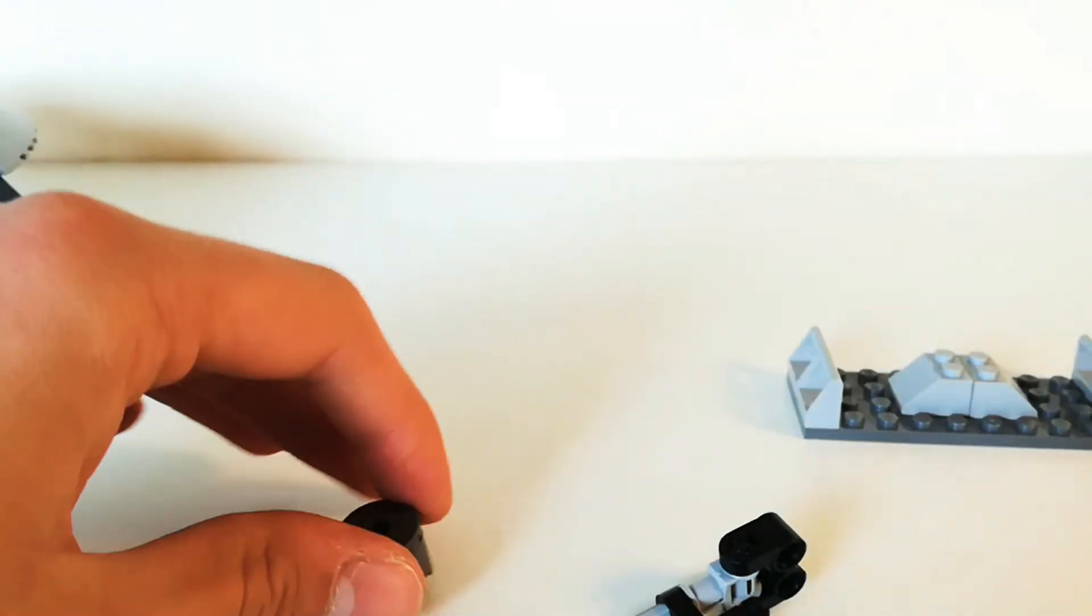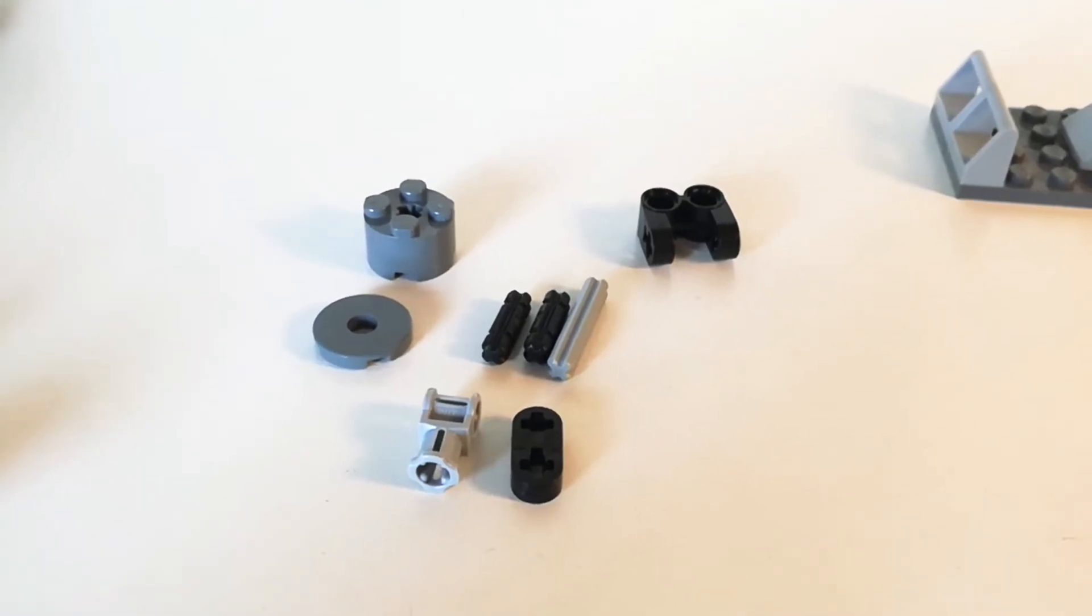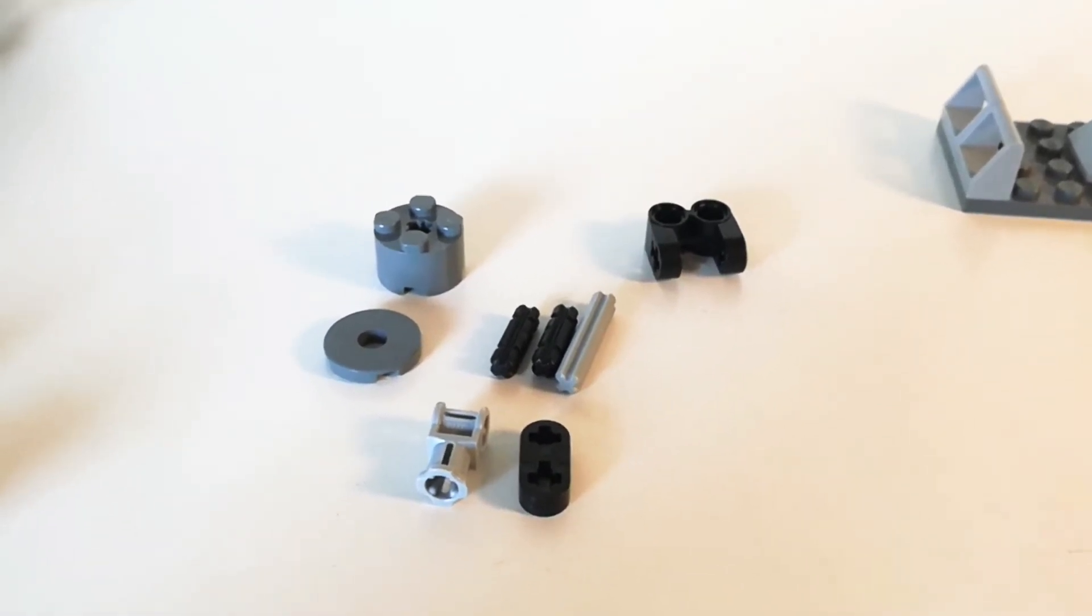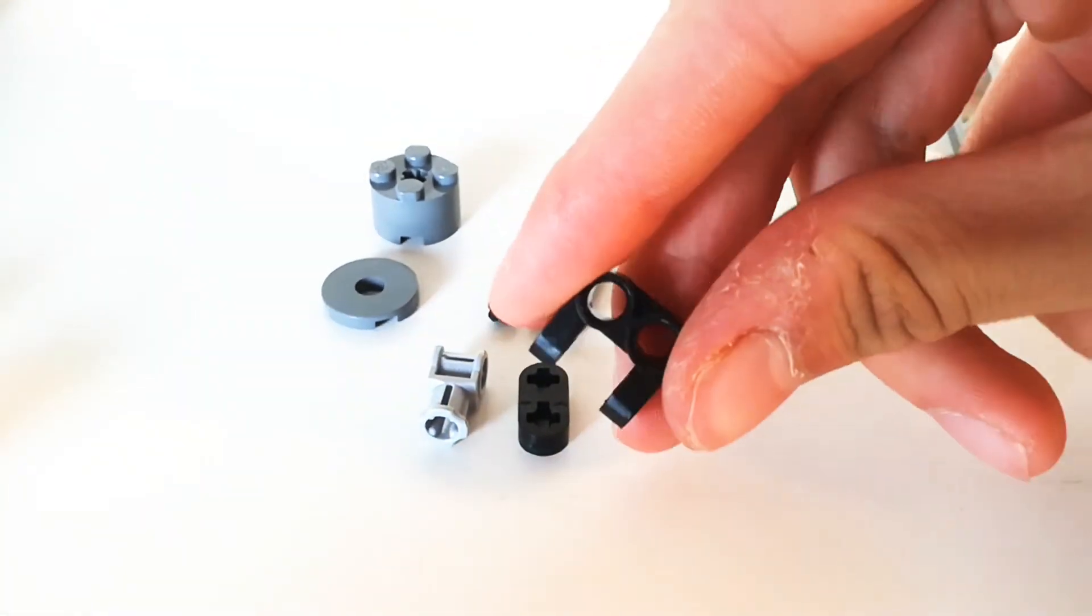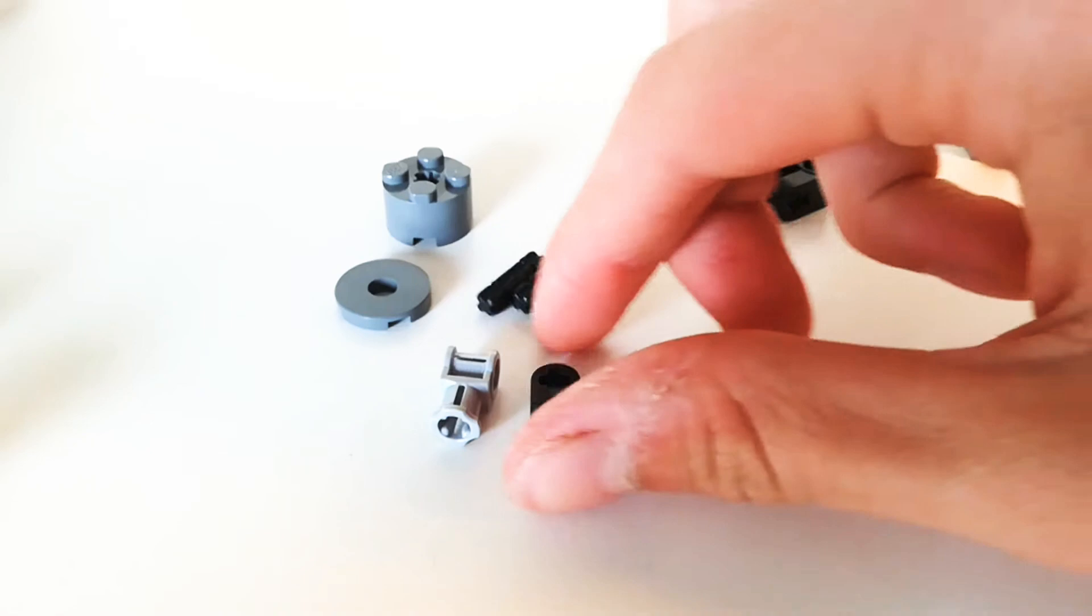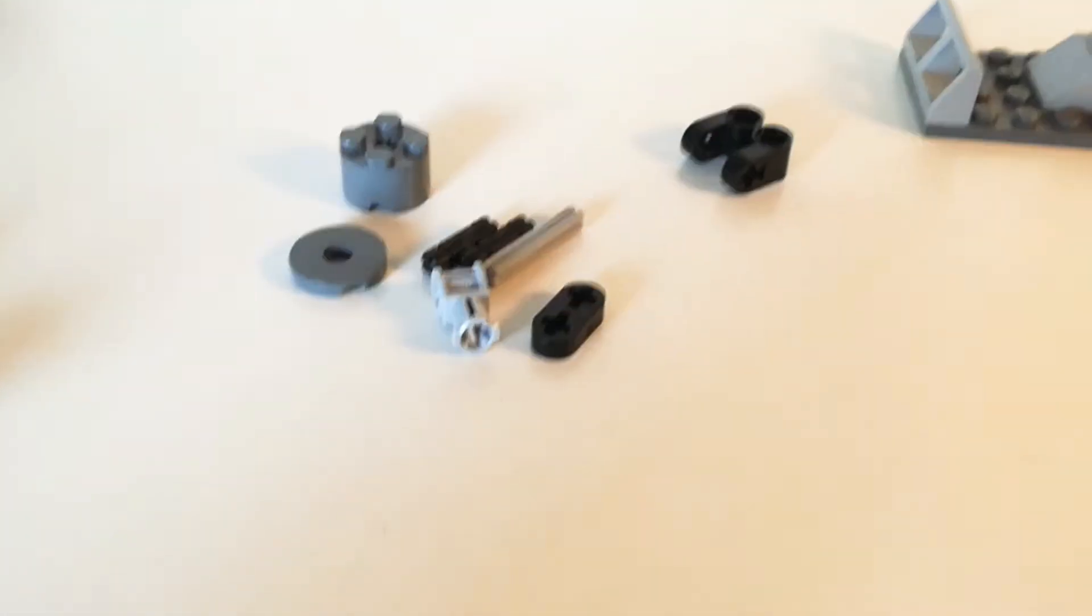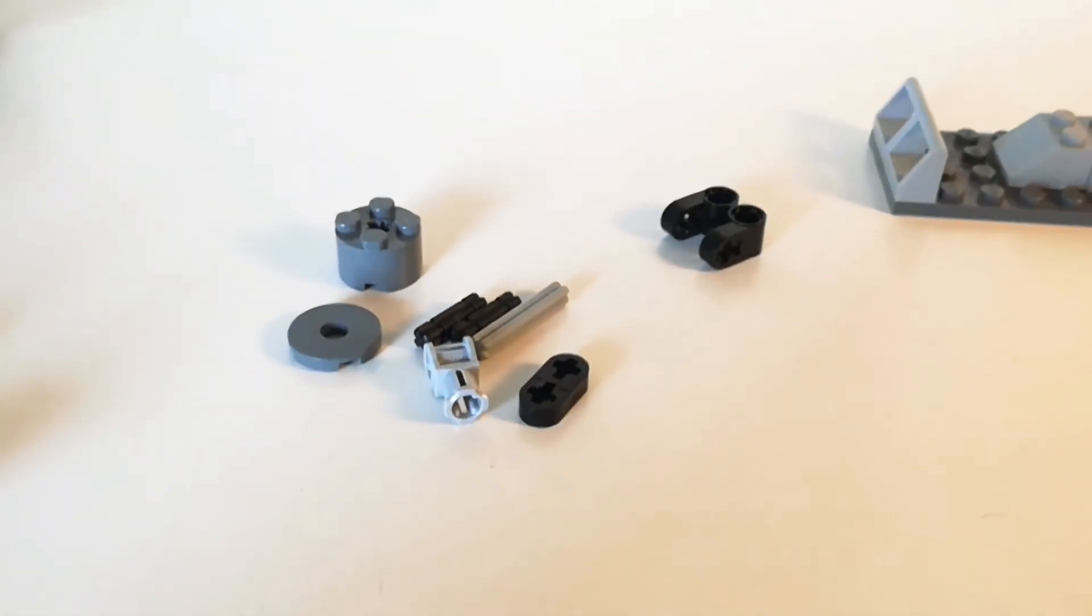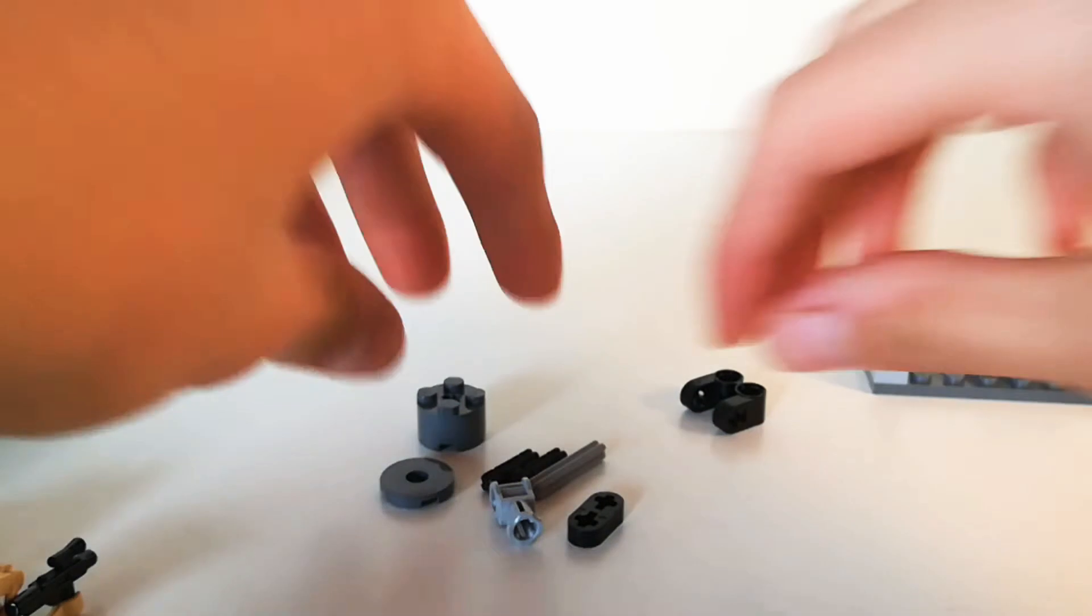It uses two black axles, one light gray axle - the second smallest type - and this technic piece here and this small technic piece here. I don't know the names of any of these. You can just look at them and maybe find them in your collection. Now let me show you how to build it.